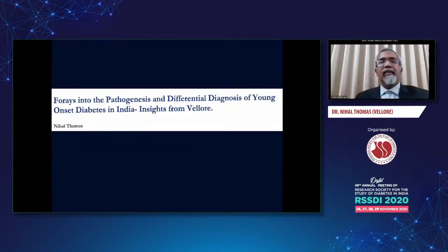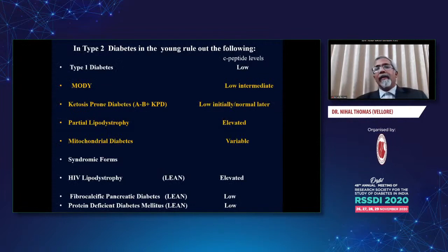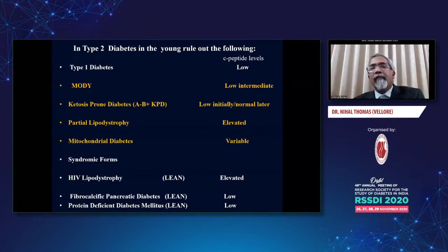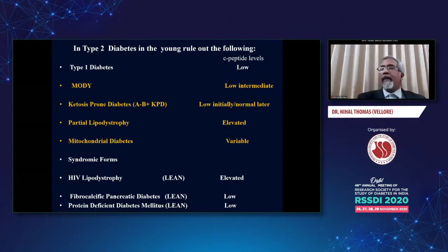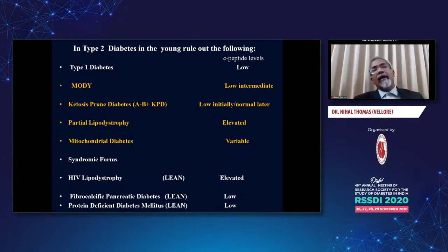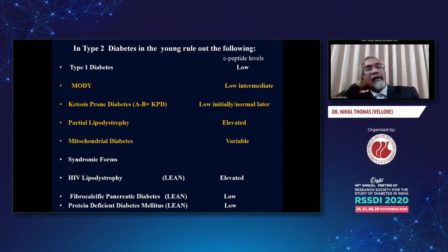We go next to differential diagnosis, and here we have a number of differentials to consider when we think about young people. We divide these individuals into those who are lean, those with optimal body mass index, and those who are overweight. Type 1 diabetes is a low BMI disease by and large, and it is the most common cause for young-onset diabetes in the young population — below the age of 20 in particular, type 1 diabetes is the most common cause, and is therefore an important differential diagnosis for all diabetes at that age.